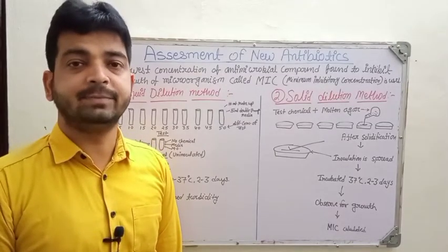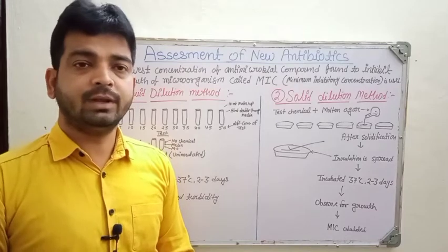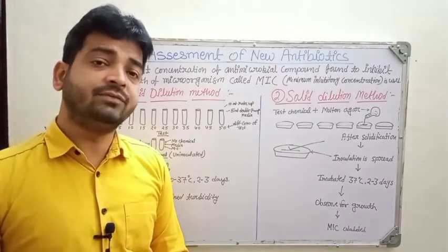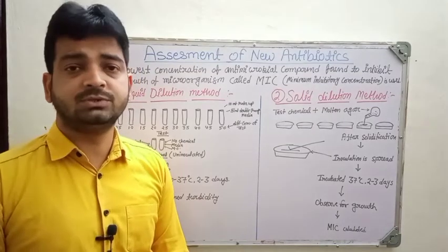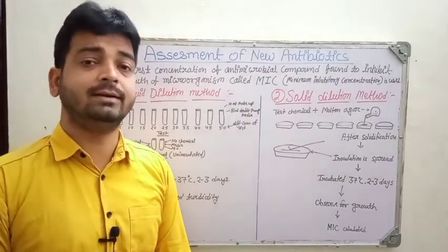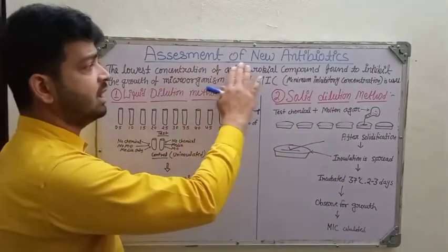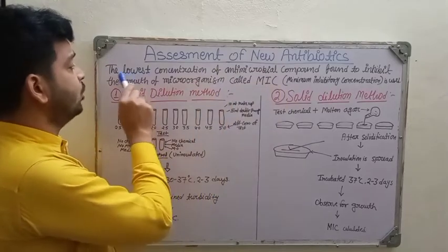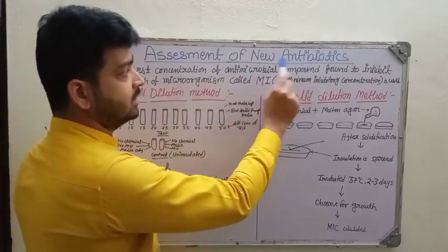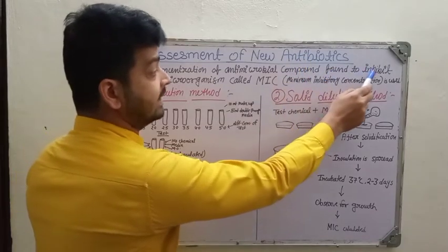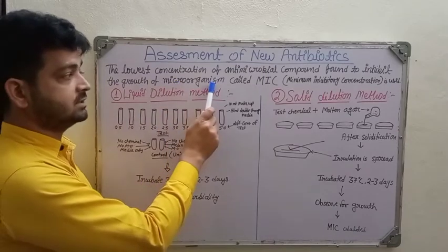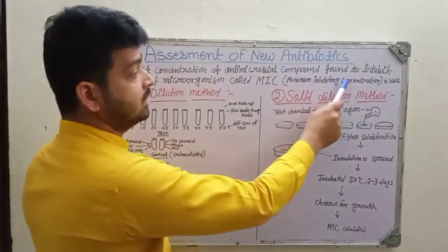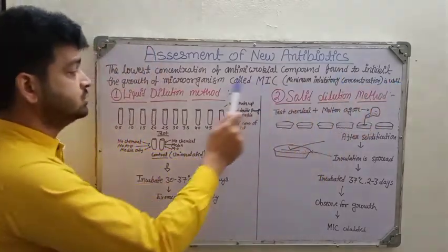We are going to discuss the assessment of new antibiotics. Whenever we want to check any new plant extract or new antibiotic — whether it gives an inhibitory effect compared to a standard — there are two methods: the solid dilution method and the liquid dilution method. The key parameter is MIC, minimum inhibitory concentration, which is the lowest concentration of an antimicrobial compound found to inhibit the growth of a microorganism.